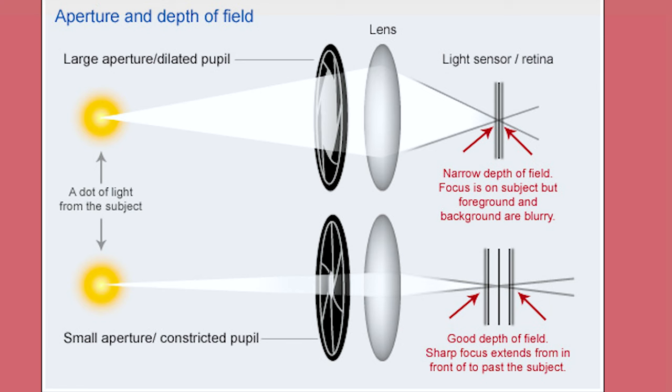The smaller the hole, the less light that comes in. The larger the hole, the more light there is.